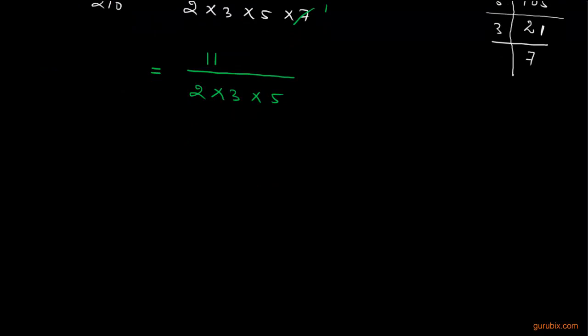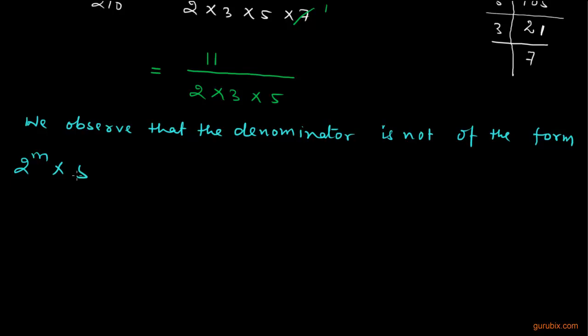And what we observe is that the denominator is not of the form 2 to the power m multiplied by 5 to the power n, because 3 remains here in the denominator.